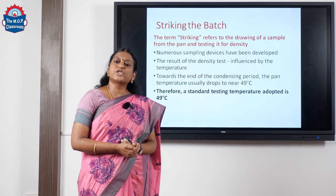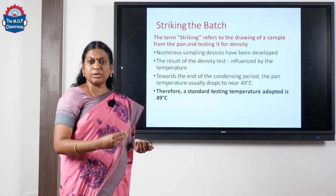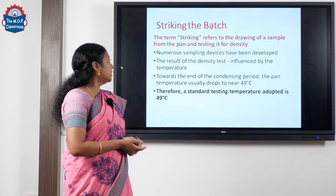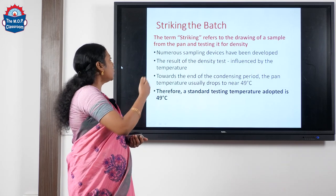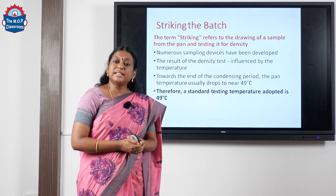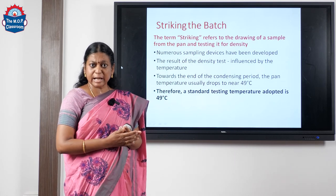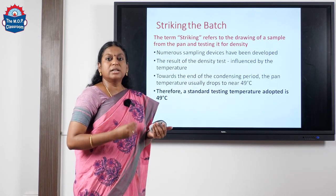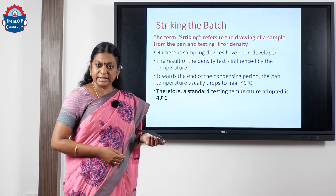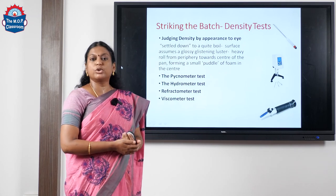The next important step is striking the batch. We are heating the milk, condensing it, and removing a part of the water. So we need to know when to stop — that is striking the batch. The term 'striking' refers to drawing a sample from the pan and testing it for density. Density is directly affected by temperature, so we take a standard testing temperature of 49°C to check the density of the product.